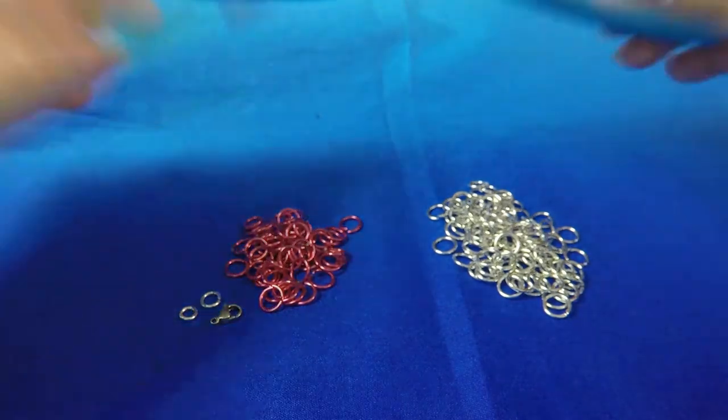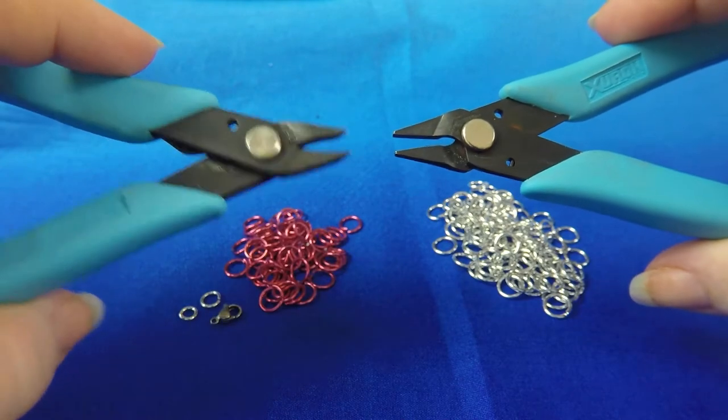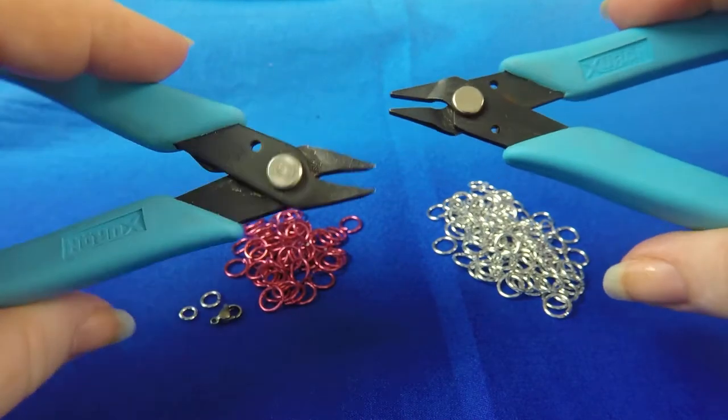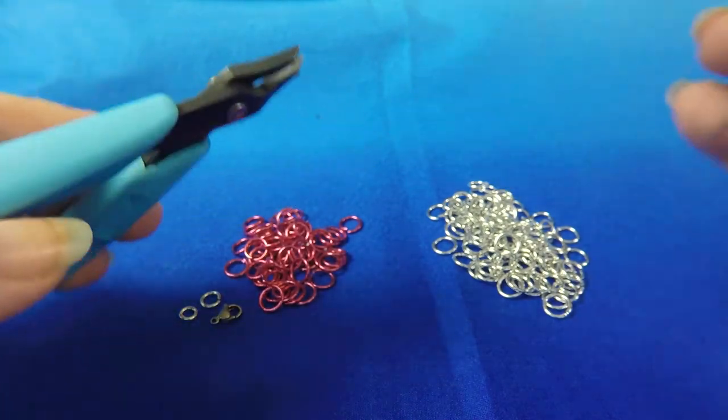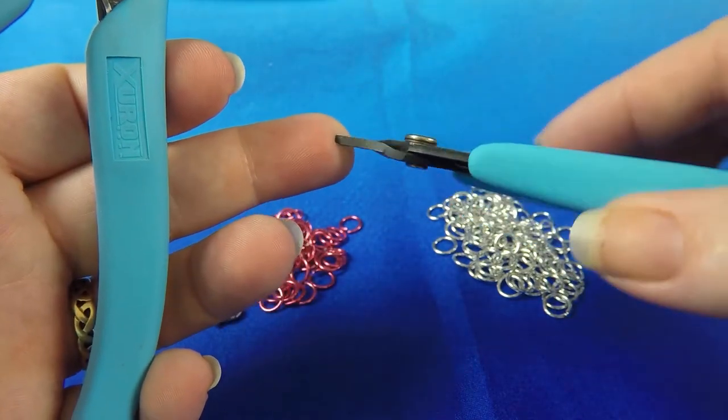And of course you'll need two pairs of smooth jawed pliers. We're using pliers today from our Xuron range. We've got a chisel nose plier and the short nose plier.